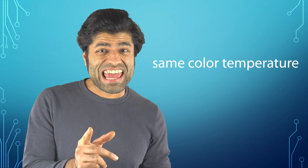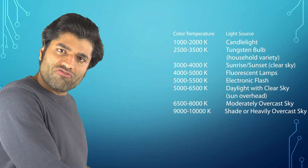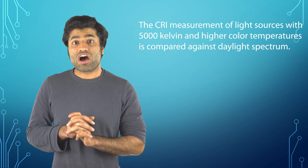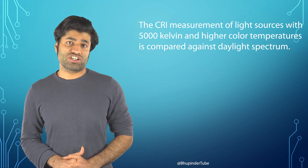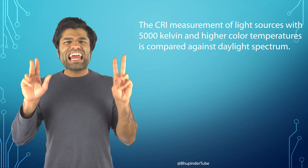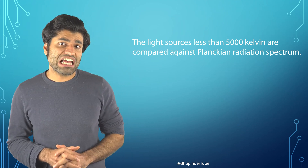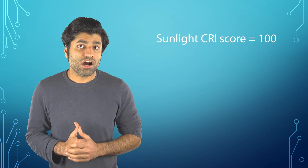The colors under both the artificial light source and sunlight are compared at the same color temperature. Here you can see the color temperatures of various different light sources. The CRI measurements of light sources with 5000 Kelvin and higher color temperatures are compared against the daylight spectrum, and light sources less than 5000 Kelvin are compared against the Planckian radiation spectrum.